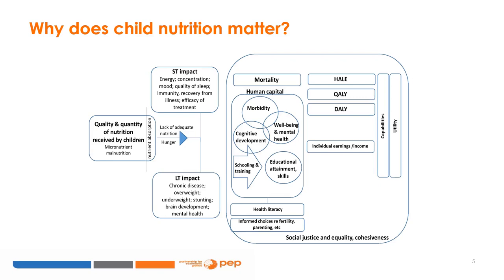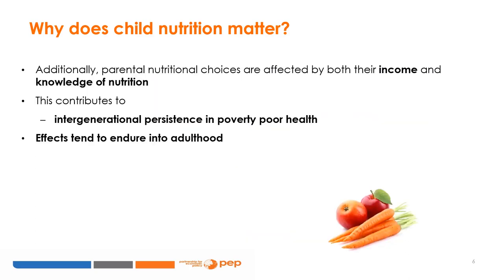Nutrition can, for instance, influence health literacy, which will in turn determine high-impact life and health choices such as reproductive decisions. These pathways are important because they tend to perpetuate and entrench poverty and privilege, which will impact social justice, equality, and social cohesion. Nutrition matters also because it can perpetuate current distributions of poverty and privilege and work against social mobility.